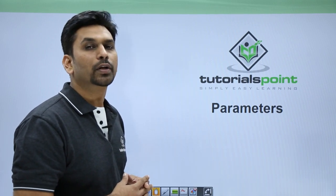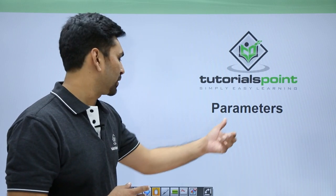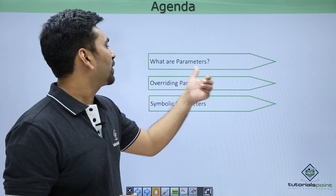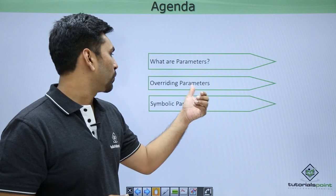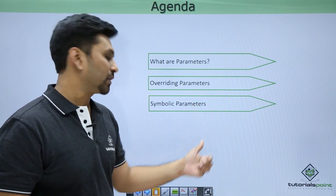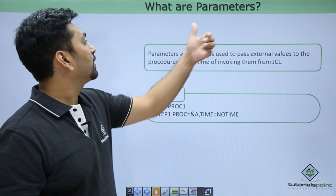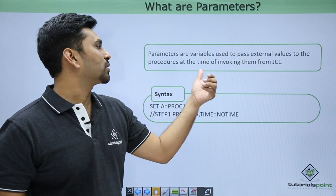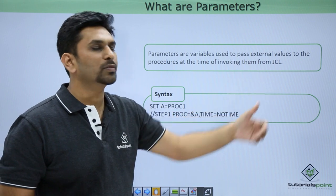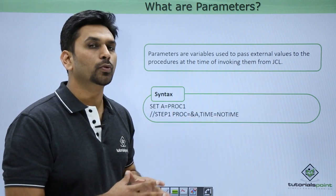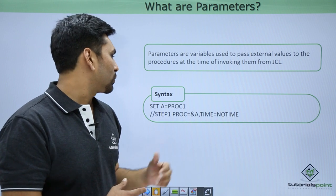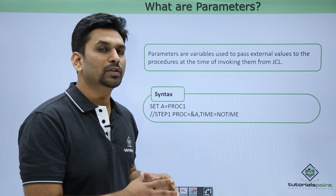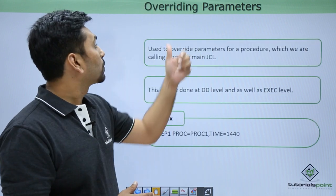Welcome to Tutorials Point. In this video we will cover parameters. The agenda includes what parameters are and the different types: overriding parameters and symbolic parameters. Parameters are variables used to pass external values to procedures at the time of invoking them from JCL, making them generic and reusable. We will see the syntax for both overriding and symbolic parameters in the next slide.